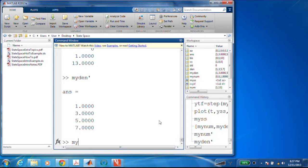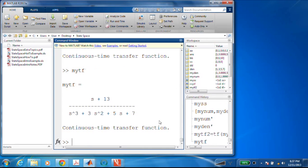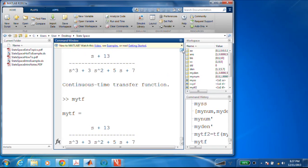And my den is exactly what I had in my TF. Another way to do this is I could say my TF2 is equal to TF, my num, and my den. I'm just creating another transfer function. There's my TF2. And there is my TF. They're identical. So another quick sanity check between the state space realization and the transfer function and a way to extract a transfer function from a state space realization in MATLAB.